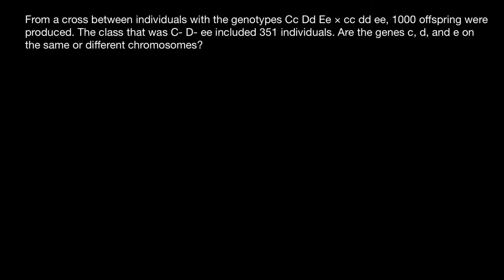Hello and welcome to Nikolai's genetics lessons. Today's question is from a cross between individuals with certain genotypes. From this cross, 1000 offspring were produced. The class of offspring included 351 individuals. Are the genes C, D, and E on the same or on different chromosomes?